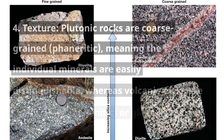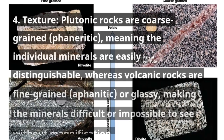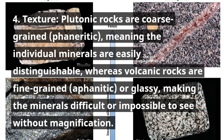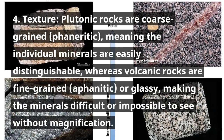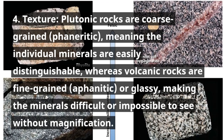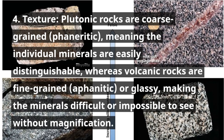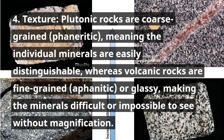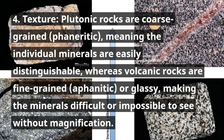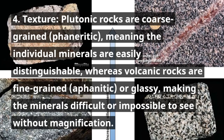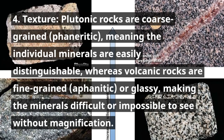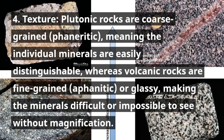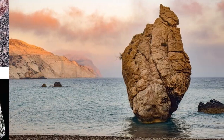Texture: Plutonic rocks are coarse-grained, phaneritic, meaning the individual minerals are easily distinguishable, whereas volcanic rocks are fine-grained, aphanitic, or glassy, making the minerals difficult or impossible to see without magnification.